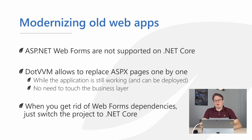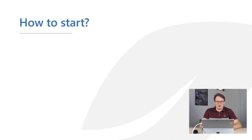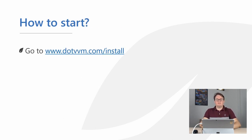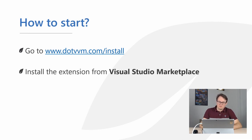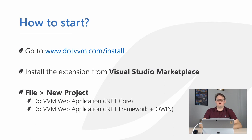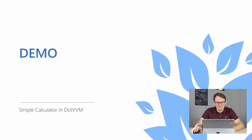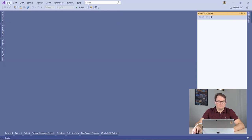Once you've removed all Web Forms dependencies — specifically the System.Web assembly — and since DotVVM syntax is identical on both .NET Framework and .NET Core, you can switch to .NET Core. To get started, visit dotvvm.com and download the Visual Studio extension, or install it from Visual Studio via Tools > Extensions by searching for DotVVM. Then use File > New Project and search for DotVVM project templates.